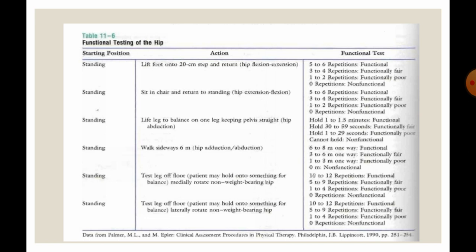In standing, you can ask the patient to sit on a chair and return to standing — that requires hip flexion and extension activity. You can ask the patient to lift a leg and balance on one leg keeping the pelvis straight. Then ask the patient to walk sideways around six meters, which tests hip abduction and adduction range of motion. You can also test medial rotation and lateral rotation of the non-weight-bearing hip while the test leg is off the floor.